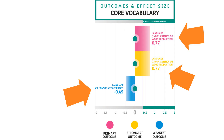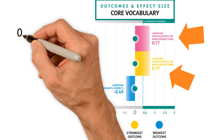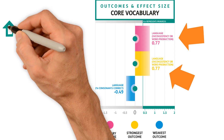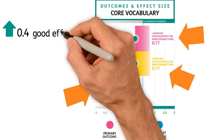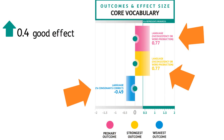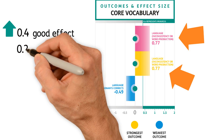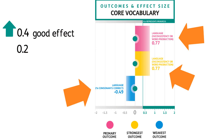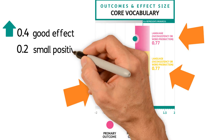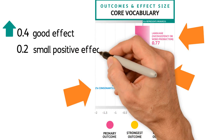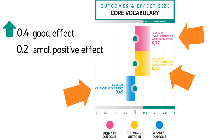When interpreting effect sizes, it's important to remember: 1. An effect size of 0.4 and above can be regarded as having a good effect. 2. An effect size of 0.2 can be regarded as a small, positive effect. This, however, may not prove useful clinically.